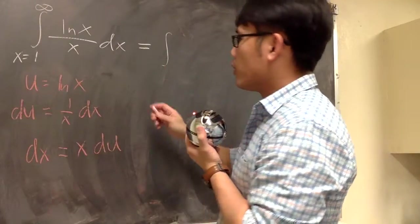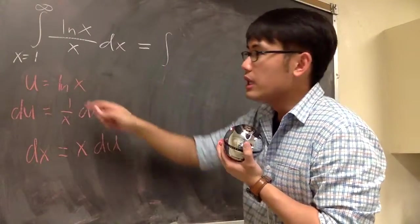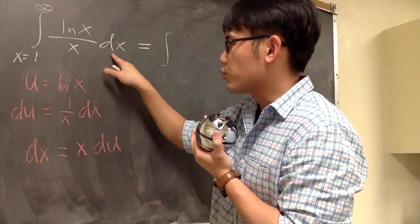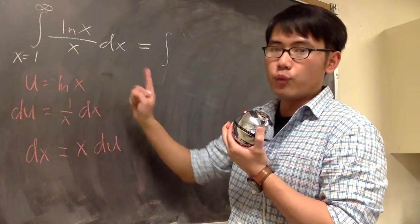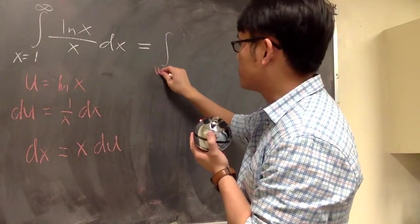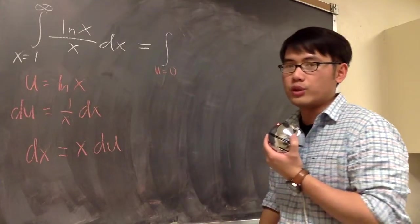But then, in the u world, I have to make the change. If x is equal to 1 in the x world, that means I have to plug in 1 here. U will be ln of 1, which then corresponds to 0 in the u world.